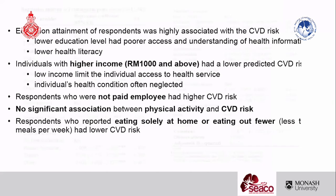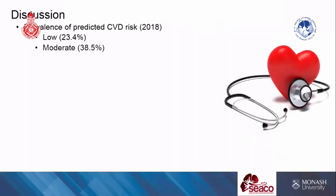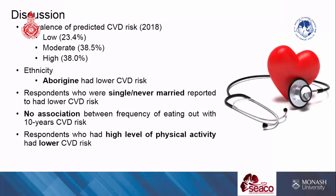For the 2018 data, results were similar to 2013: male respondents had higher cardiovascular risk, and those with higher education and higher income had lower cardiovascular risk. Respondents who were not paid employees also had higher cardiovascular risk. However, from the aspect of ethnicity, Aboriginal respondents were found to have lower cardiovascular risk in 2018 — consistent with the descriptive analysis showing their proportion of high cardiovascular risk had reduced.